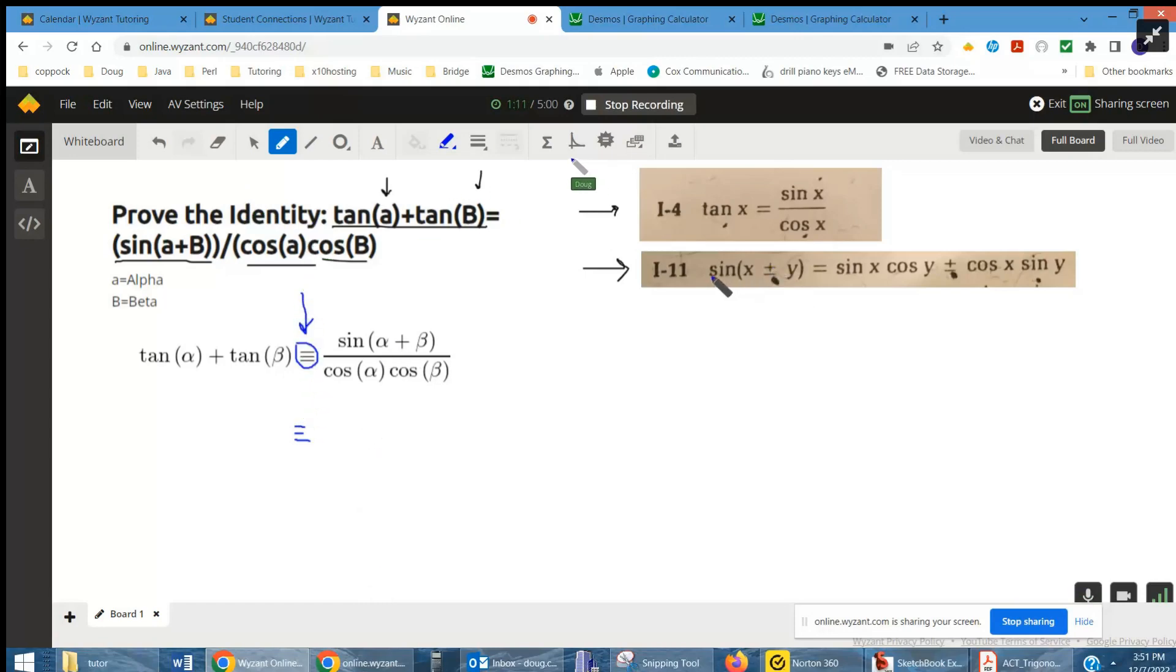The sine of alpha plus beta—we're going to use this trigonometric identity. The sine of the sum of two angles can be rewritten as sine of the first angle, which is alpha, times cosine of the second angle, which is beta,